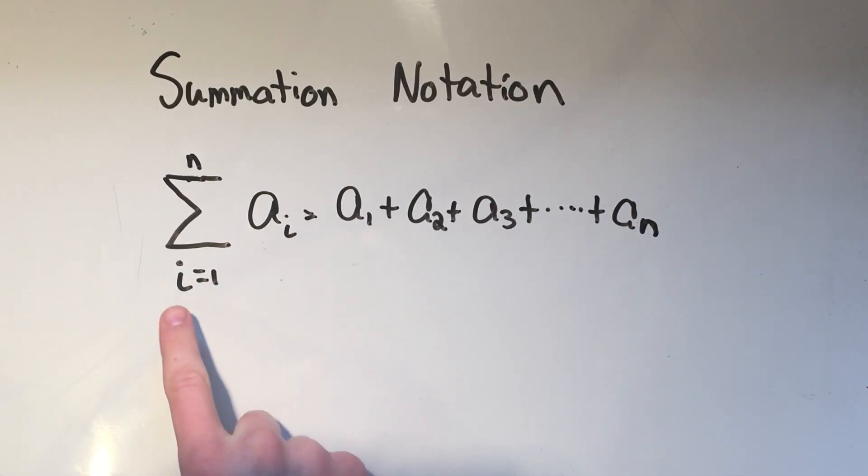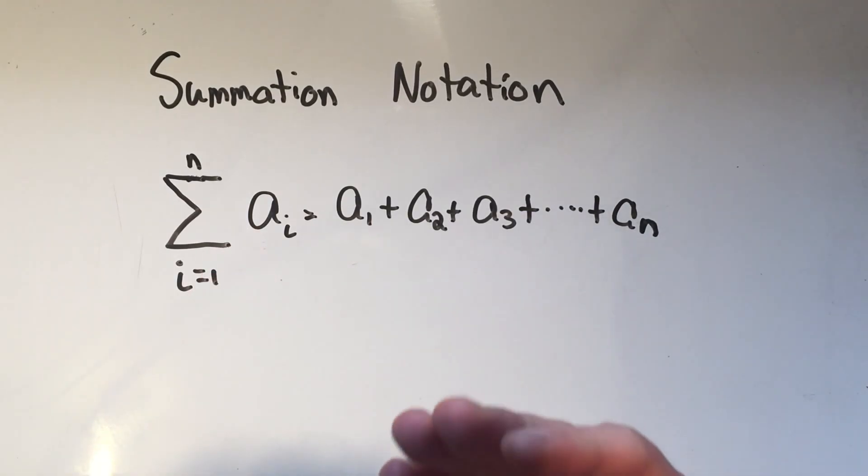It doesn't really matter, I could have used k here, and all of these would be k's, but usually you see like i or k or j or something like that. And what you're summing up is this thing, and it says a sub i, so it's indexed by i.